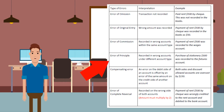Moving on, error of principle. This is when the amount was recorded in the wrong accounts under different account types. An example would be: the purchase of stationery for $300 was recorded to the fixtures account.